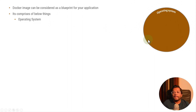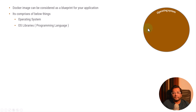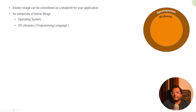The second thing is OS libraries — for example, programming language libraries. Whenever you create an application, you provide some dependent libraries and some dependent programming languages which compile or interpret your code. All these things can be considered as OS libraries, and that is the second layer which this Docker image contains. It can include SSL-based libraries, curl, wget — all these are OS-based libraries and form the second layer.